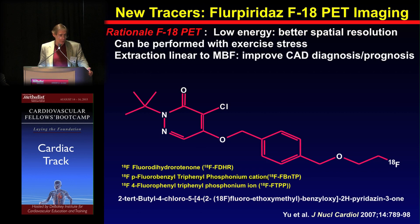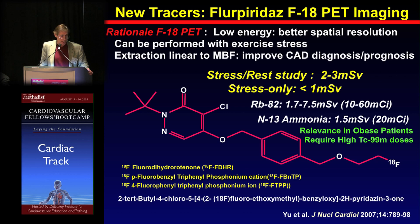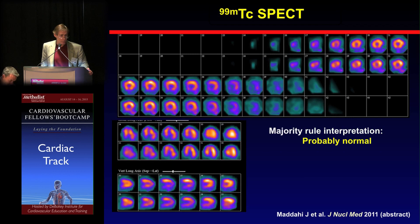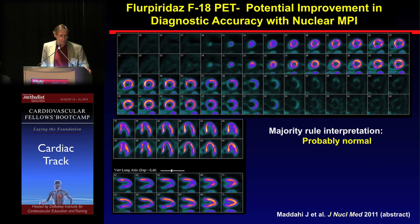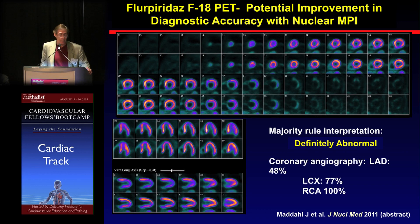Fluorpiridaz is one such agent coming into the clinical arena probably in the next year or two, and it is a PET agent. It has very low energy, better spatial resolution, and its extraction fraction is linear to blood flow, which should improve diagnostic capabilities, plus it has very low radiation exposure. As an example, this patient had a sestamibi study showing a little inferior defect due to extraction fraction issues, but with fluorpiridaz you see marked abnormalities in flow at stress compared to improvement at rest. We think this agent will be very good at looking at flow in a more categorical and accurate fashion.